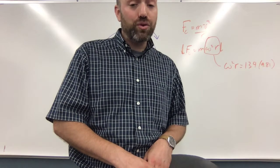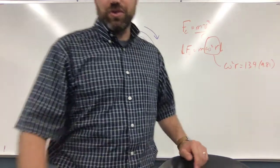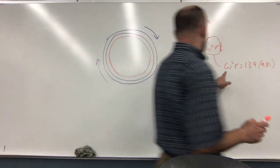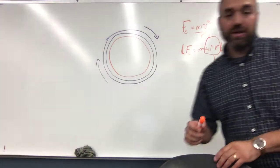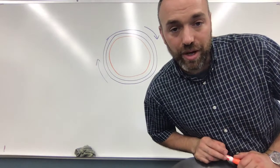They want the answer in revolutions per minute. So, you would solve this for omega, given the r that they gave you, the inner radius.